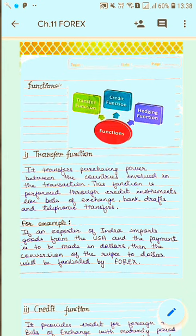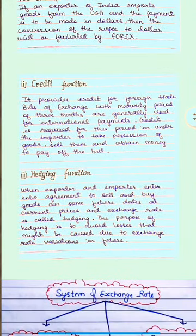Next is the credit function. If an exporter in India imports goods from the US, and the payment is to be made in dollars, then the conversion of rupees to dollars is facilitated with the help of Forex. The credit function provides credit for foreign trade, such as bills of exchange with a maturity period of 3 months. Just as domestic trade depends on credit, foreign exchange market provides credit in foreign trade transactions — that is the credit function.